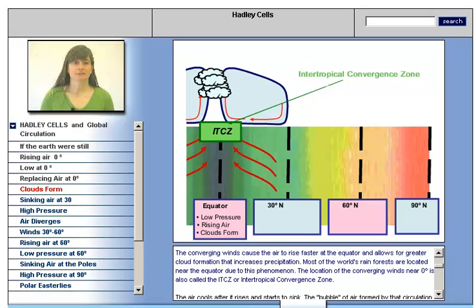The converging winds cause the air to rise faster at the equator and allow for greater cloud formation and increased precipitation. Most of the world's rainforests are located near the equator due to this phenomenon. The location of the converging winds near zero degrees is also called the ITCZ, or Intertropical Convergence Zone.